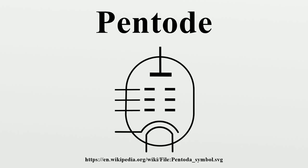The pentode was developed from the tetrode tube by the addition of a third grid, the suppressor grid. This served to prevent secondary emission electrons emitted by the plate from reaching the screen grid, which caused instability and parasitic oscillations in the tetrode.